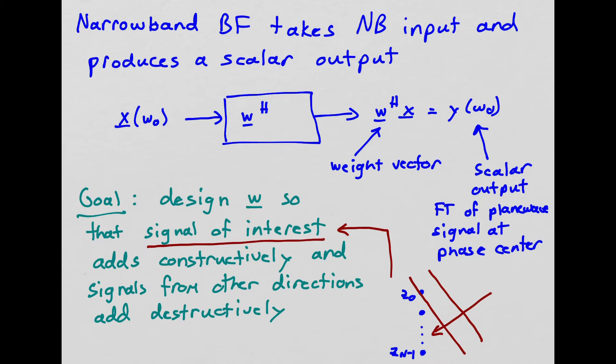But remember, we've taken a Fourier transform, we're dealing with narrowband signals. So a delay in time corresponds to a phase shift in the frequency domain. So the measurement, the narrowband measurement across the array, they're just phase shifted versions of one another. So we're going to design our weight vector so that it will align all of the phases of our desired signal and ideally misalign the phases of the undesired signals.